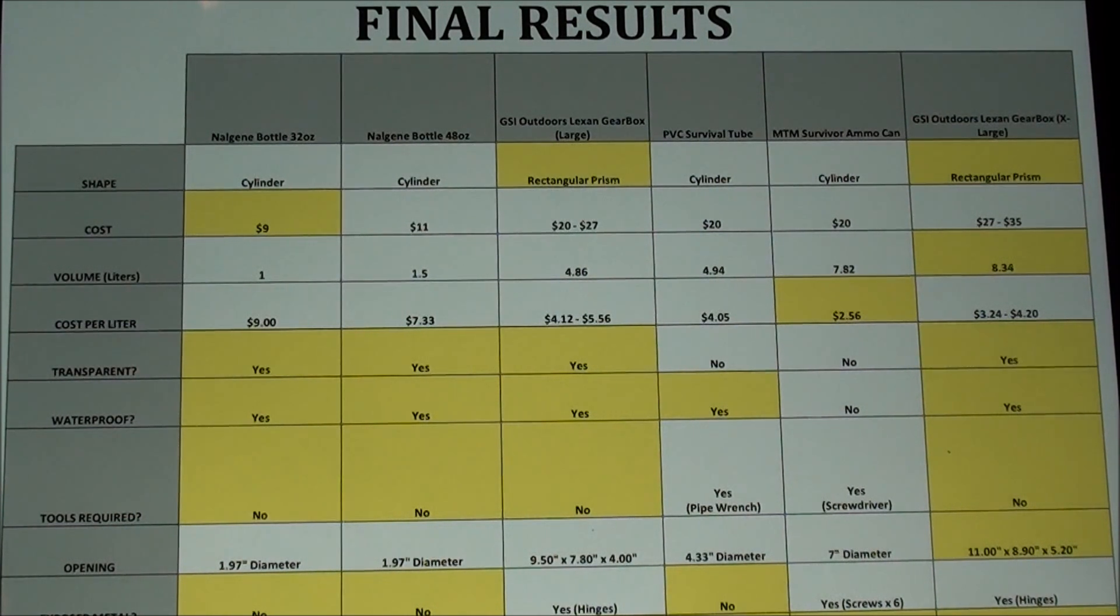I have all the containers organized from smallest to largest. So the smallest one being the Nalgene water bottle and the largest one being the GSI Outdoors Lexan gearbox extra large. And I have the one that I felt was the winner for the particular category highlighted in yellow. So with regard to shape, I find that having a rectangular prism is the best shape to have for a survival cache because it allows you to store things in there a lot more efficiently. It's easier to play Tetris with a rectangular prism than it is with a cylinder. With regard to cost, this one's kind of a variable but the cheapest one to get is a Nalgene water bottle at around $9.